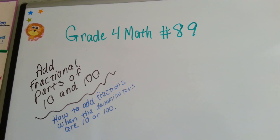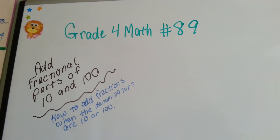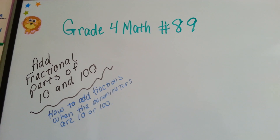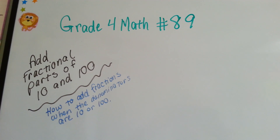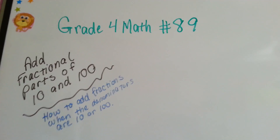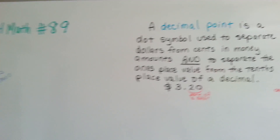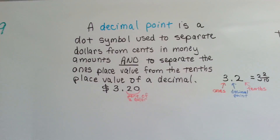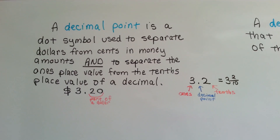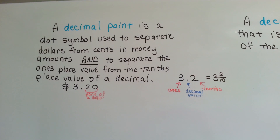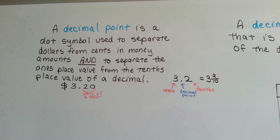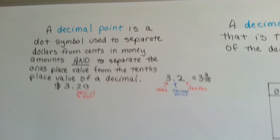Grade 4 math, number 89: add fractional parts of 10 and 100. This is how to add fractions when the denominators are a 10 or a 100 and they're mixed. So remember, a decimal point is a dot symbol used to separate dollars from cents in money amounts, and to separate the ones place value from the tenths place value of a decimal.